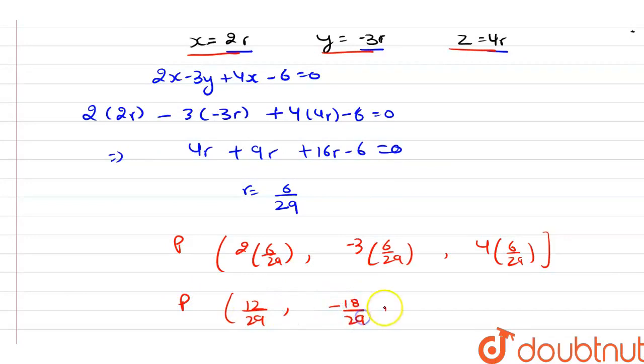So now from here we have coordinates of P, and that is equal to 12/29, -18/29, and 24/29. So this is our answer.